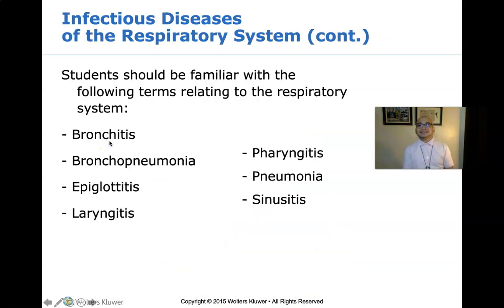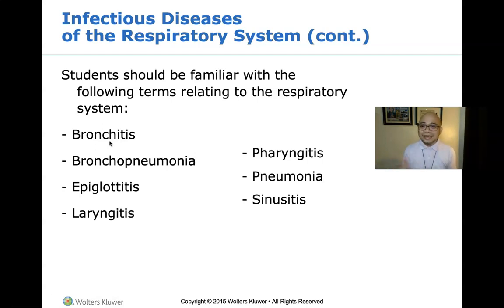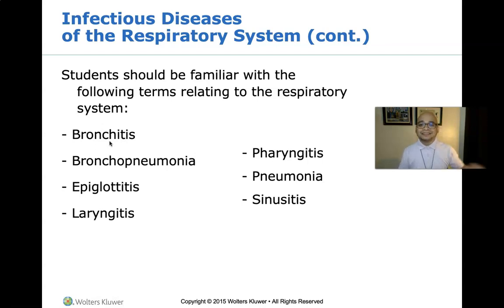Infectious diseases of the respiratory system are very common, so you have to be familiar with the anatomical parts. Bronchitis refers to inflammation of the bronchial tract. Epiglottitis refers to the epiglottis. Laryngitis refers to the larynx. Sinusitis refers to the sinuses. Pharyngitis refers to the pharynx.